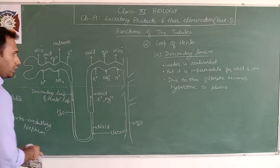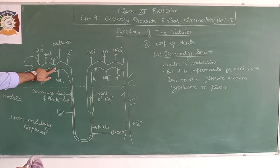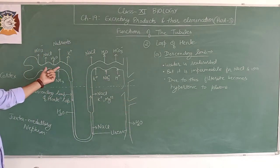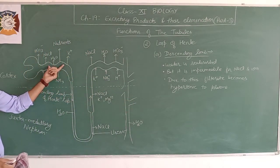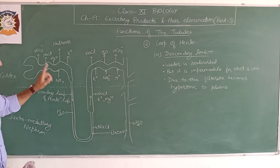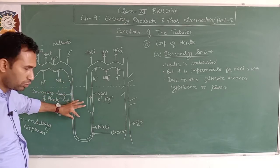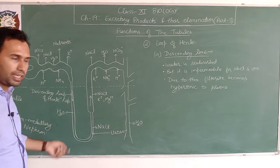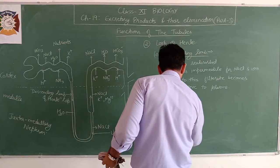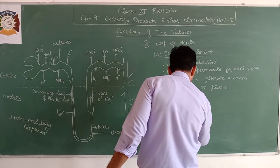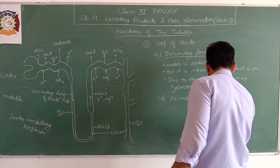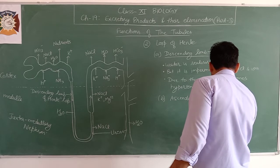The filtrate formed in PCT is isotonic with blood plasma. After the descending limb, it becomes hypertonic because water has left. Now we move to the ascending limb of the Loop of Henle.